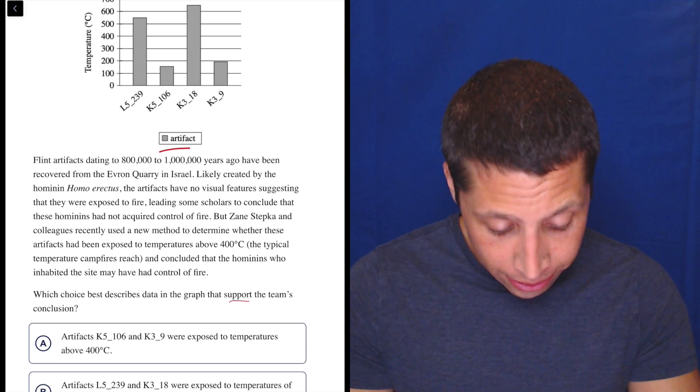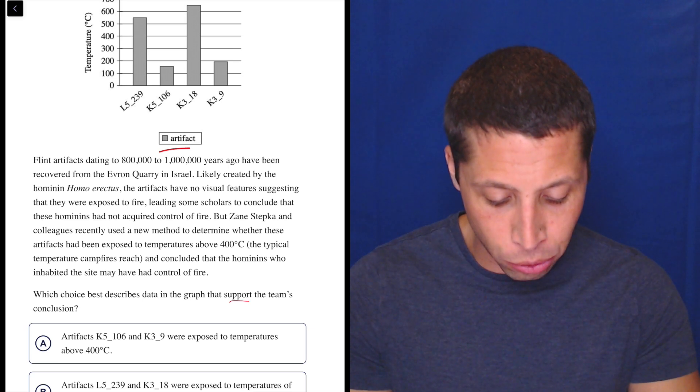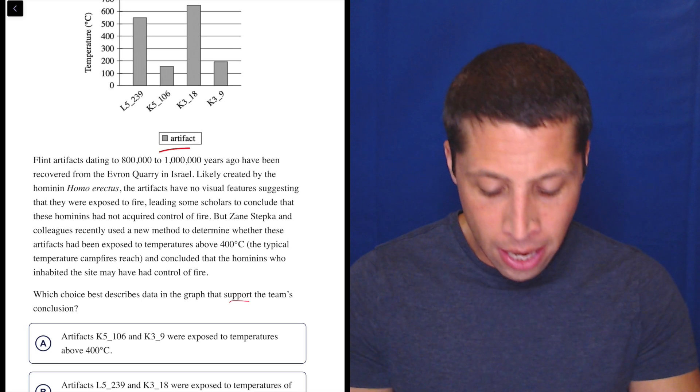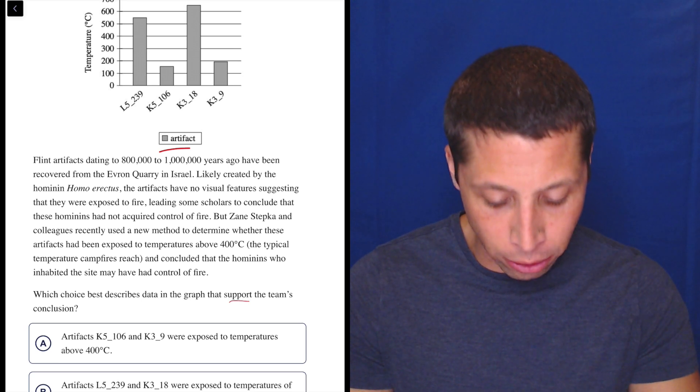But Zane Stepka and colleagues recently used a new method to determine whether these artifacts had been exposed to temperatures above 400 degrees Celsius, the typical temperature campfires reach, and concluded that the hominins who inhabited the site may have had control of fire.